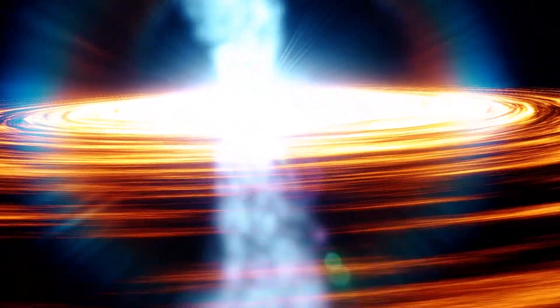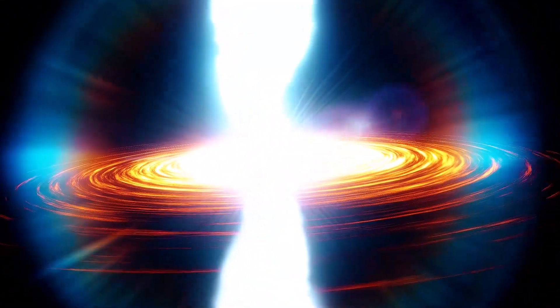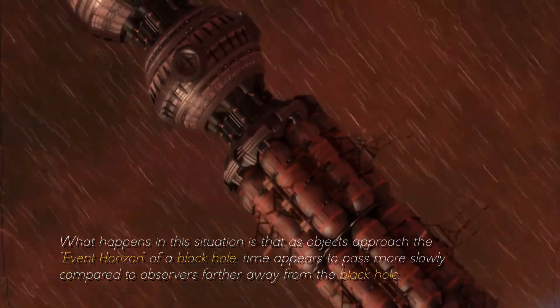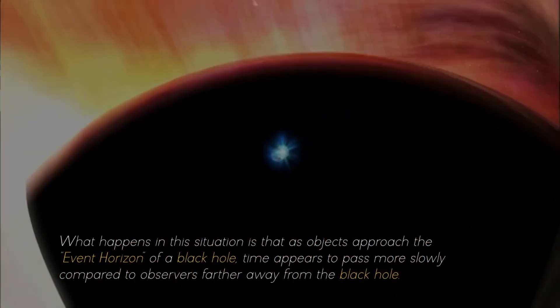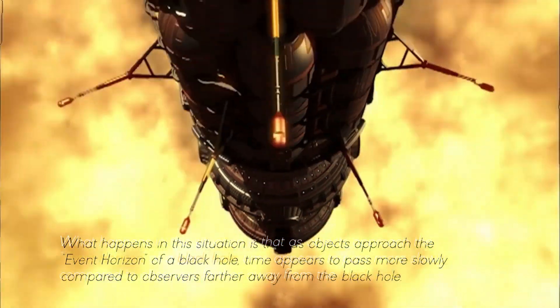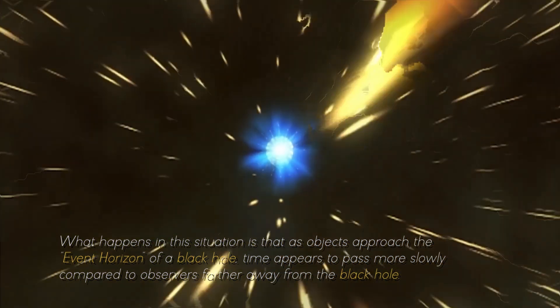But most surprising of all, the extreme gravitational attraction near a black hole gives rise to a phenomenon known as time dilation. What happens in this situation is that as objects approach the event horizon of a black hole, time appears to pass more slowly, compared to observers farther away from the black hole.